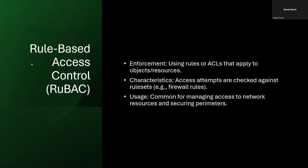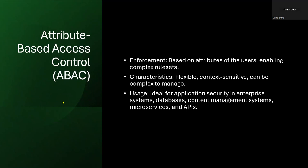Next is rule-based access control — note the distinction from role-based access control. Here, a set of rules or an access control list applies to objects and resources; access attempts are checked against some kind of ruleset. A common example is a firewall, used to manage access to a network. We also have attribute-based access control, ABAC, where enforcement is based on attributes of the user. This enables a fairly complex ruleset and is flexible, context-sensitive, though complex to manage. It is ideal for application security, enterprise systems, databases, content management systems, microservices, and APIs.